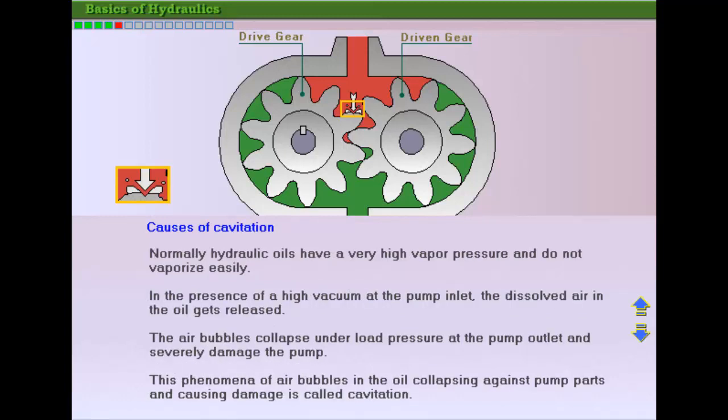Normally, hydraulic oils have a very high vapor pressure and do not vaporize easily. However, there is still a chance of cavitation as the dissolved air in the oil, typically 6-10%, is released in vacuum conditions at the pump inlet.